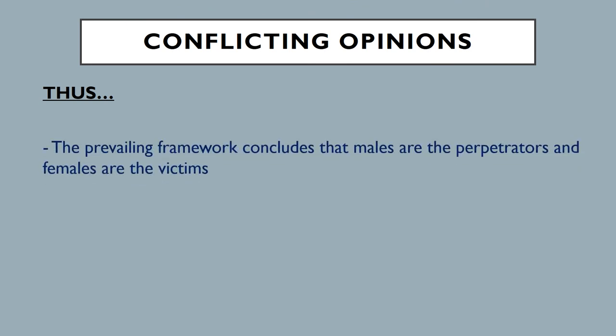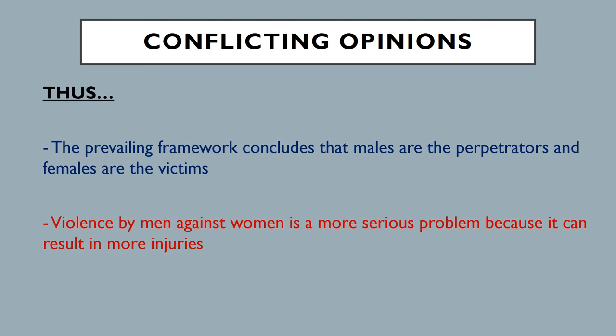When we look at these two conflicting opinions, most of the prevailing framework within research concludes that males are more often than not the perpetrators and females are the victims. The prevailing framework is also that violence by men against women is a more serious problem because it can result in more injuries. This will shine a light on what we'll see in the upcoming slides when we look at the lack of resources available for male victims of domestic violence.